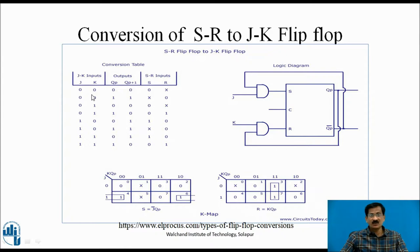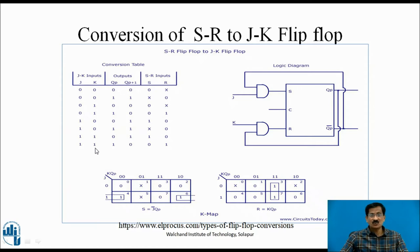For JK equals 0,0 and output transition 0 to 0, the SR inputs required are 0,X. For JK equals 0,0 and present state 1 wanting next state 1, SR input is X,0. For JK equals 0,1 and 1,0, present and next states 0,0 and 1,0 give SR inputs 0,X and 0,1 respectively. For JK equals 1,1, next states are 0,1 and 1,0, requiring SR inputs 1,0 and 0,1.